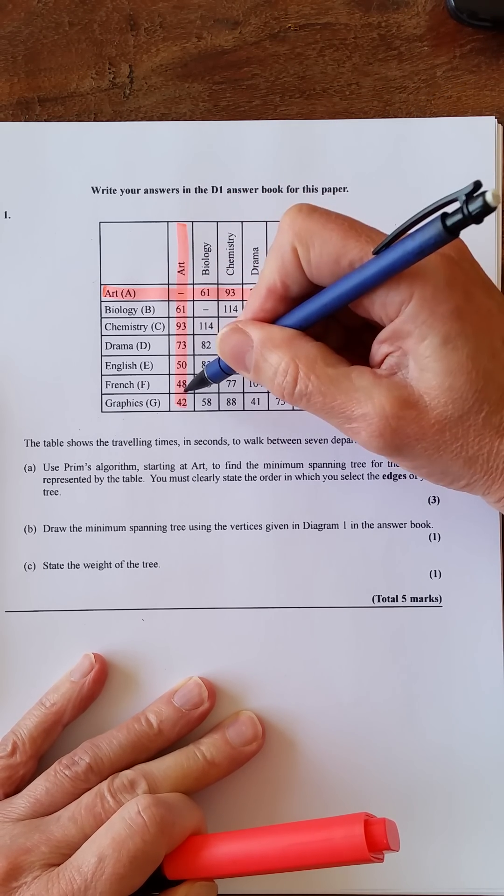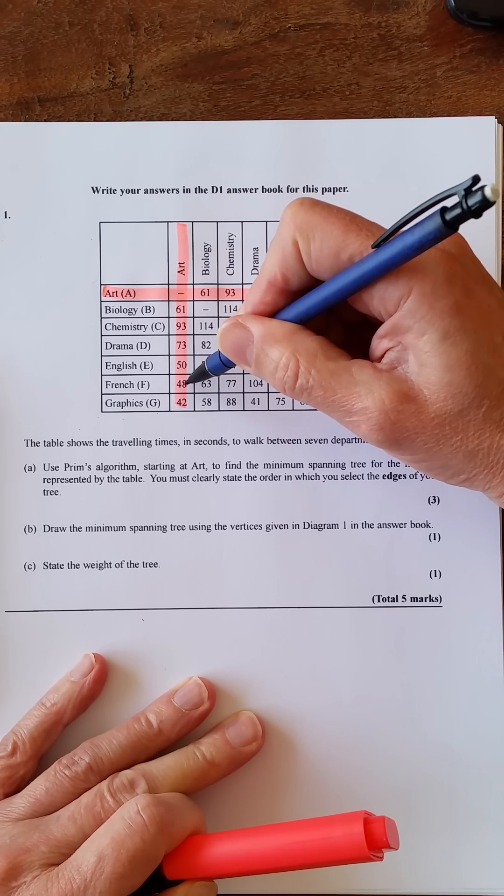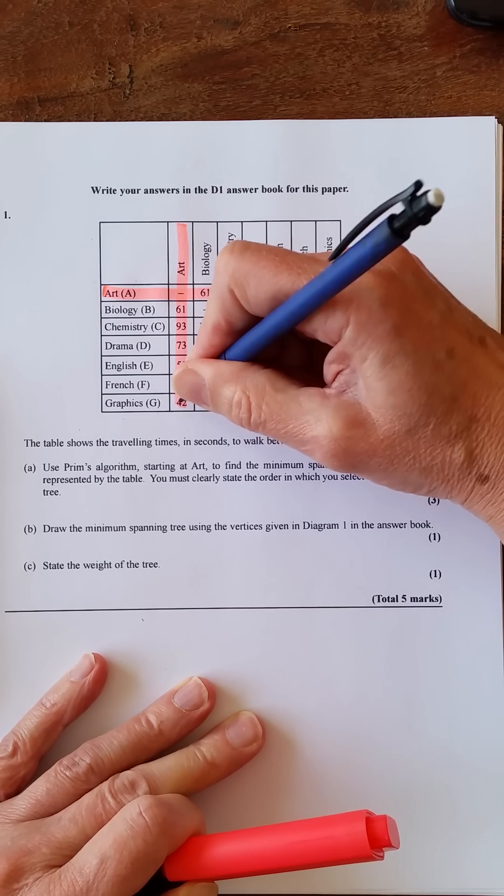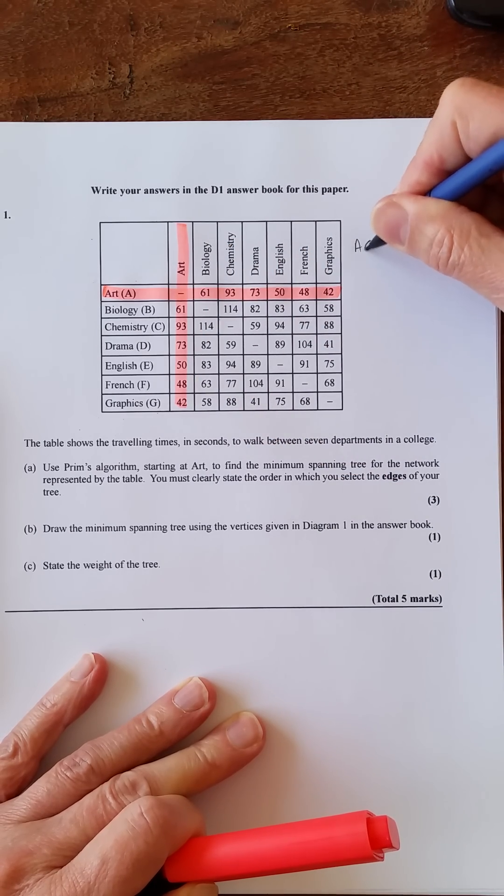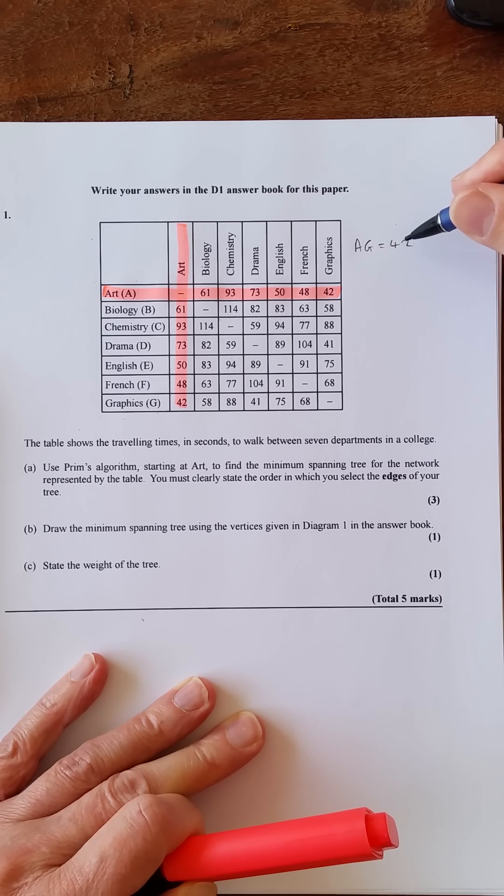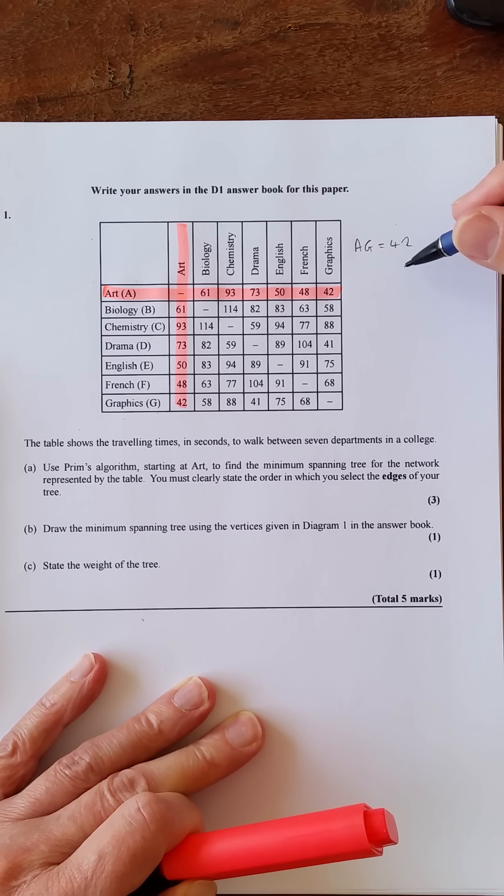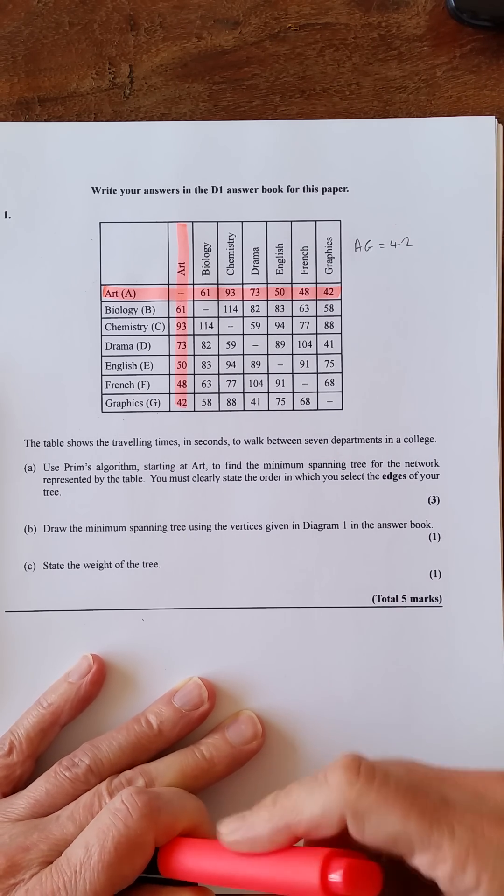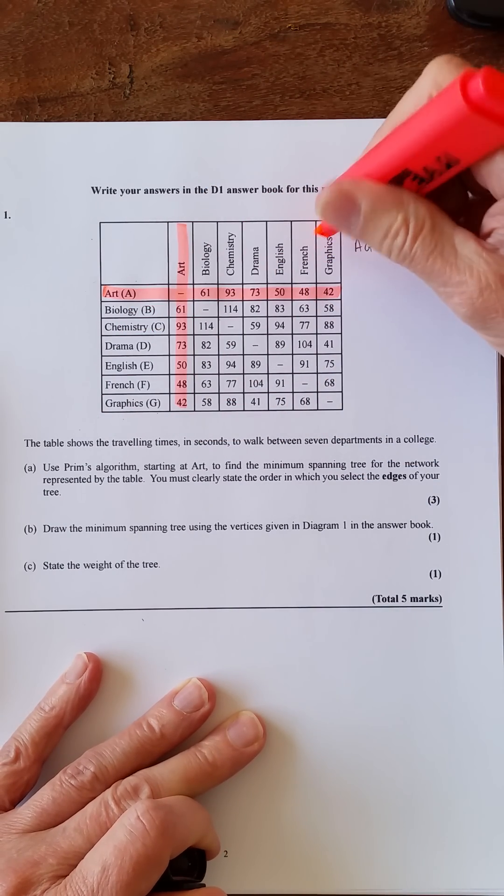So let's have a look. A to F is the first one, A to G, so AG equals 42. And it's useful to put their weightings because if you see as you work down that you get one smaller, you know you've made a mistake. So AG is the first one, so what we'll do is we'll highlight G and cross that one off.